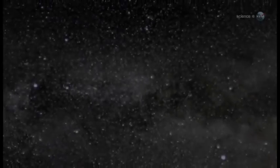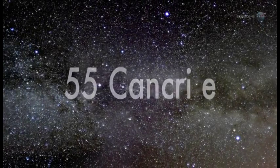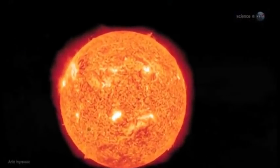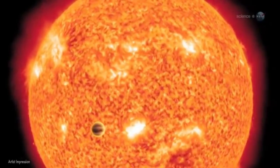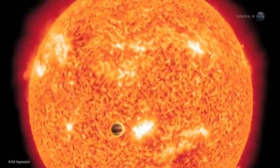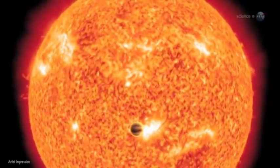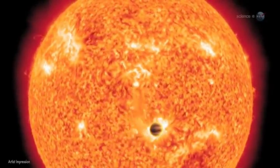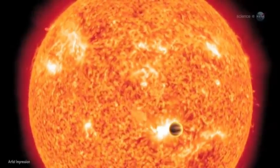Forty light-years from Earth, a rocky world named 55 Cancri e circles perilously close to a stellar inferno. Completing one orbit in only 18 hours, the alien planet is 26 times closer to its parent star than Mercury is to the Sun.